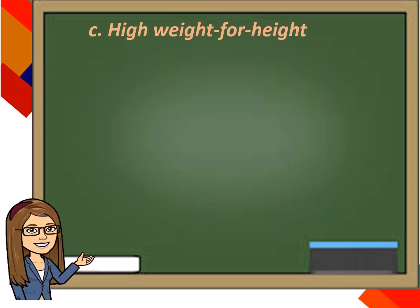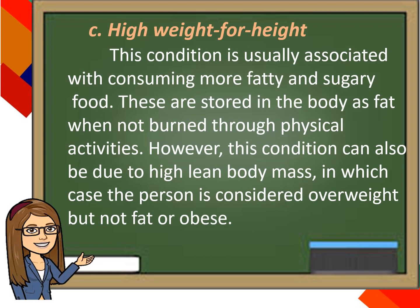High weight for height: This condition is usually associated with consuming more fatty and sugary foods, which are stored in the body as fat when not burned through physical activities. However, this condition can also be due to high lean body mass, in which case the person is considered overweight but not fat or obese.